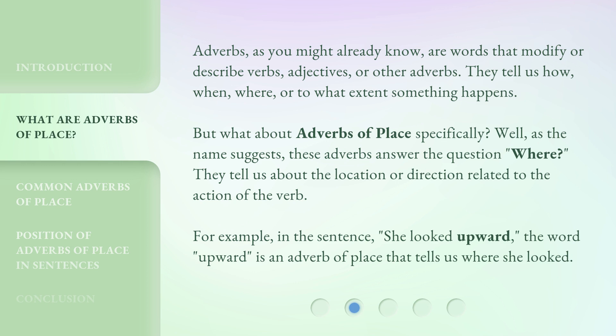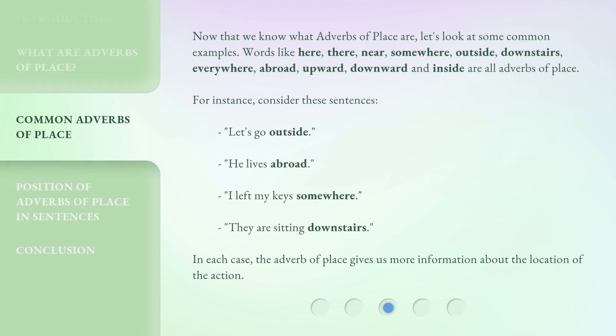For example, in the sentence 'she looked upward,' the word 'upward' is an adverb of place that tells us where she looked. Now that we know what adverbs of place are, let's look at some common examples. Words like here, there, near, somewhere, outside, downstairs, everywhere, abroad, upward, downward, and inside are all adverbs of place. For instance, consider these sentences: 'Let's go outside.' 'He lives abroad.' 'I left my keys somewhere.' 'They are sitting downstairs.' In each case, the adverb of place gives us more information about the location of the action.